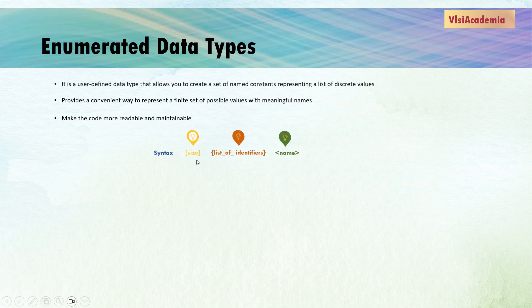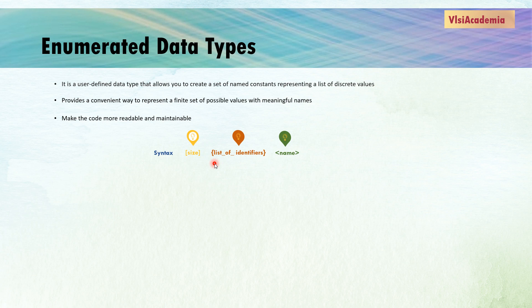Now we will see the syntax of enumerated type. First you write 'enum', then the size, then the list of identifiers, and then the name of the variable. The size is an optional specifier indicating the number of bits used to represent the enum. If not specified, the size is determined based on the number of elements in the list. The list of identifiers contains the named constants, and the last part is the variable name.